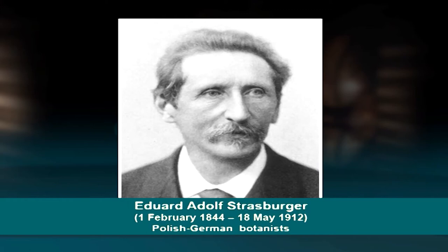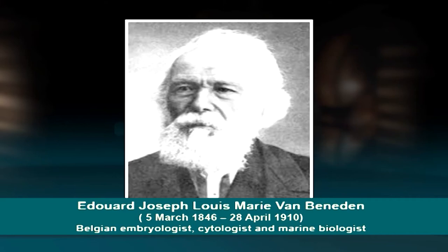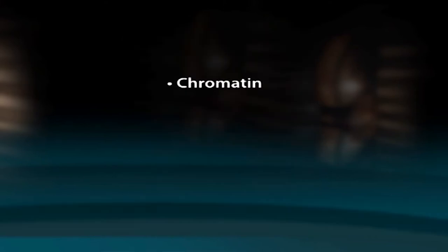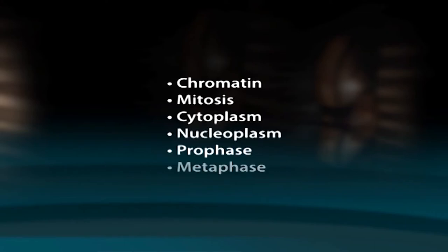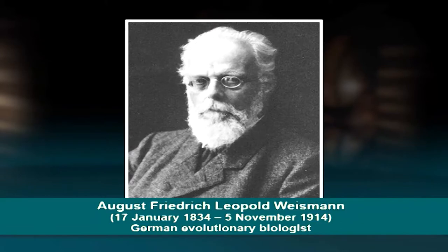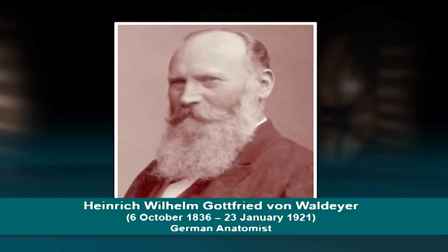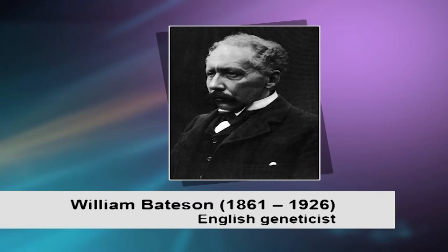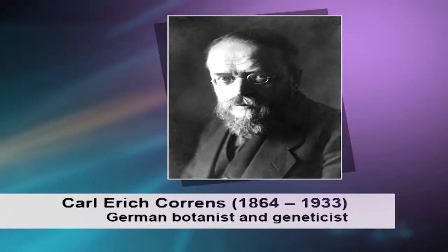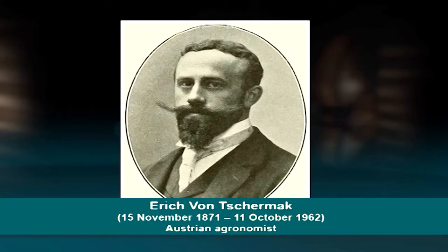In 1892, Edward Strasburger and Edward Van Beneden observed cell division and coined terms such as chromatin, mitosis, cytoplasm, nucleoplasm, prophase and metaphase. August Weismann in 1887 proposed a universal theory of chromosome behavior which predicted that meiosis occurs in sex cells. In 1888, Heinrich Wilhelm Gottfried Waldeyer applied the term 'chromosome' to the condensed version of material found within the nucleus. In 1899, William Bateson described hybridization between two individuals as a tool of scientific analysis of heredity. Mendel's work was rediscovered by Carl Correns, Hugo de Vries and Erich von Tschermak independently in 1900.